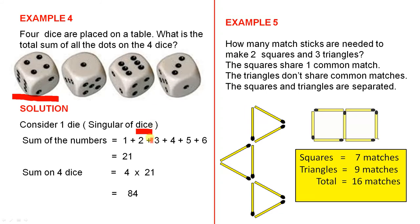Since you have four dice, you just go four times 21, and that gives you 84. You can visualize what's going on, and it helps you solve the problem.